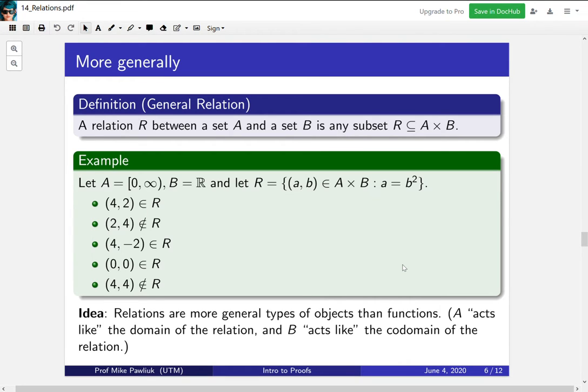Now, you've seen this type of relation before. This reminds us a lot of a function, or really a curve. Relations are more general types of objects than functions. So in this context, A will act like the domain of the relation, and B will act like the codomain of the relation. That won't formally make sense, but it's helpful to think about.